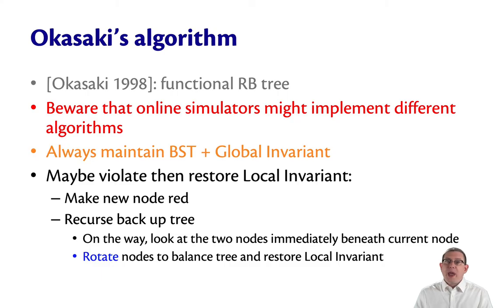And on the way back up, we'll keep looking at the two nodes immediately below the current node. If we detect a violation where we have two reds in a row, we will rotate the nodes around to cause the local invariant to hold again. And while we're at it, balance the tree, so that it has a little bit better of a shape.